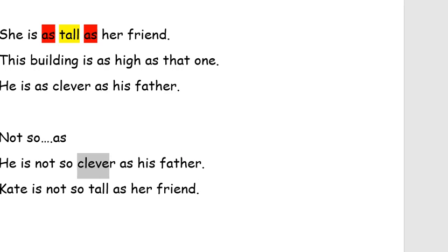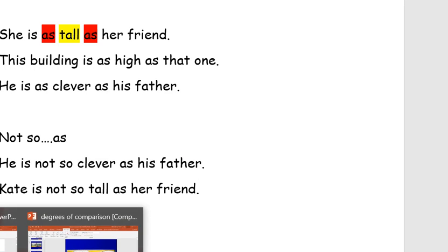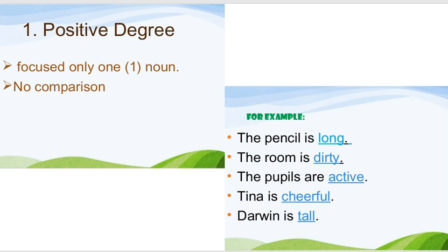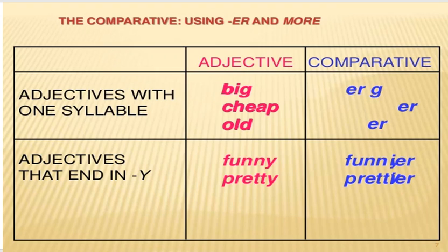Sifət gördük ki, adi dərəcədə olur. Let's continue. Let's look at comparative degree. Müqayisə dərəcəsindən baxalım. Müqayisə dərəcəsində adjectives with one syllable — tək hecalı sifətlərdə: big, cheap, old. All these adjectives are one-syllable adjectives.